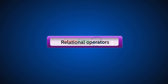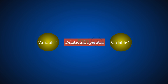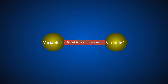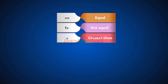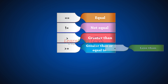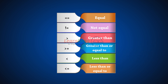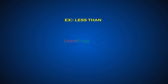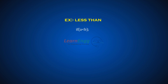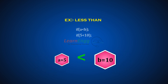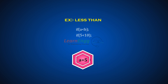Relational operators are used to find the relation between two variables. The relational operators are: equal, not equal, greater than, greater than or equal to, less than, and less than or equal to. For example, comparing two values using the less than operator: if A is 5 and B is 10, comparing A less than B — that is 5 less than 10 — since 5 is smaller than 10, this condition is true.